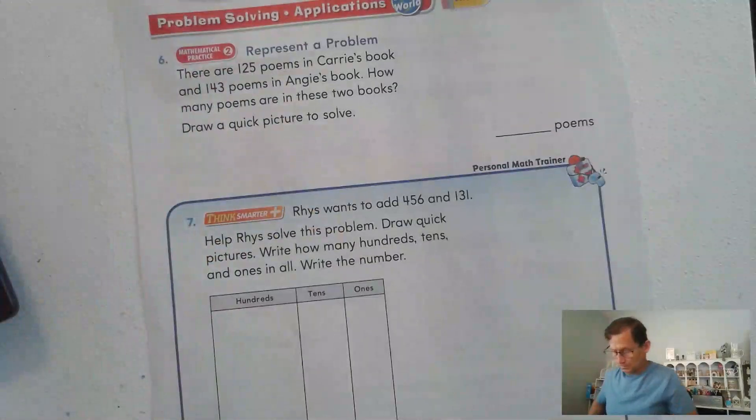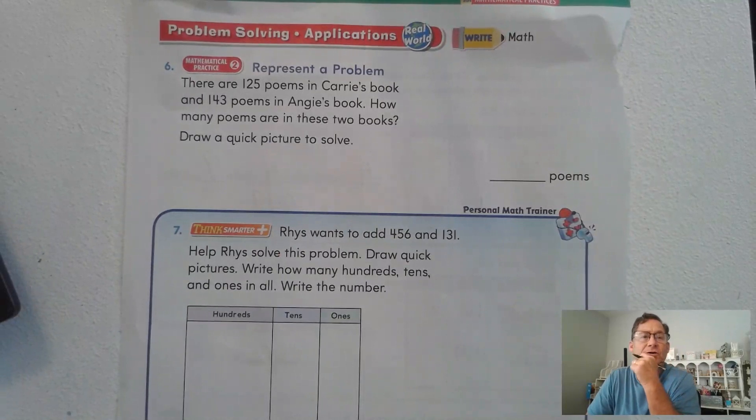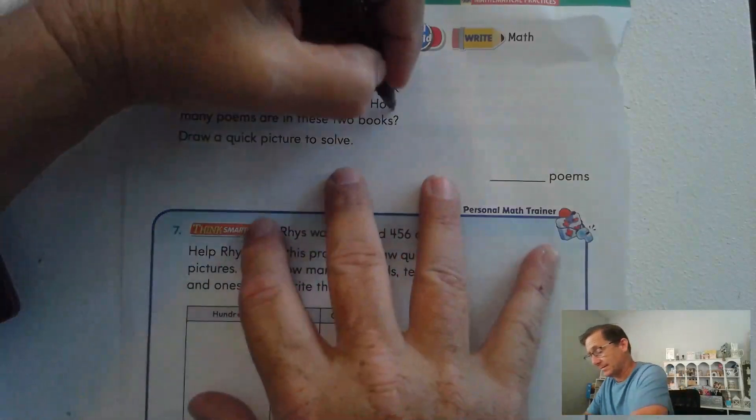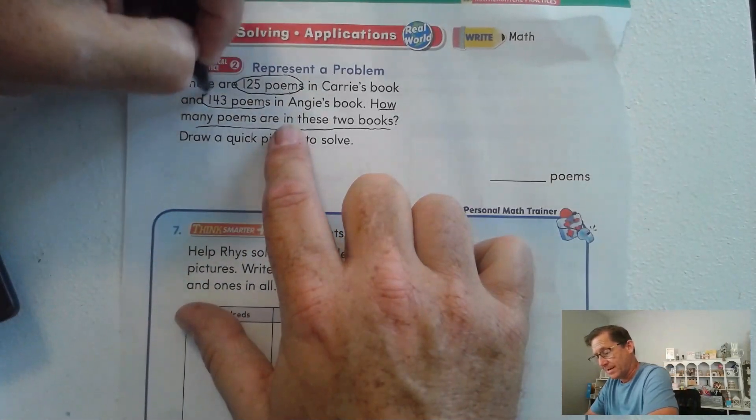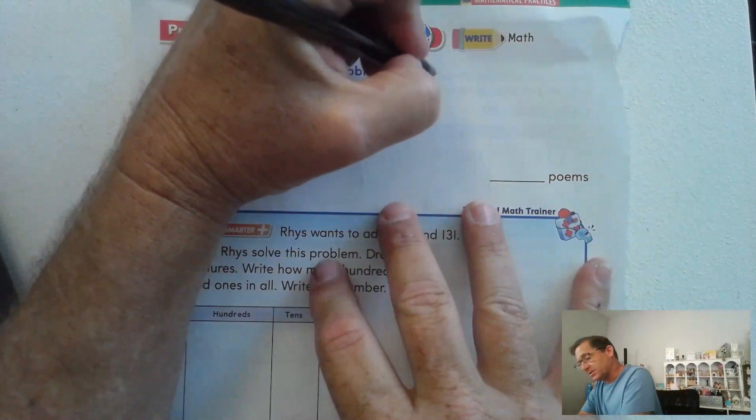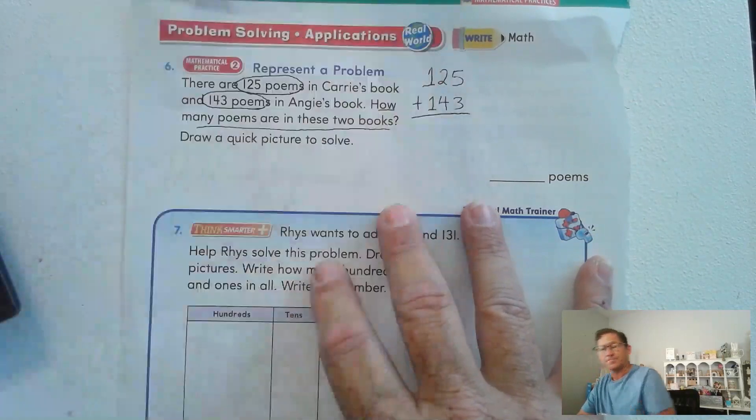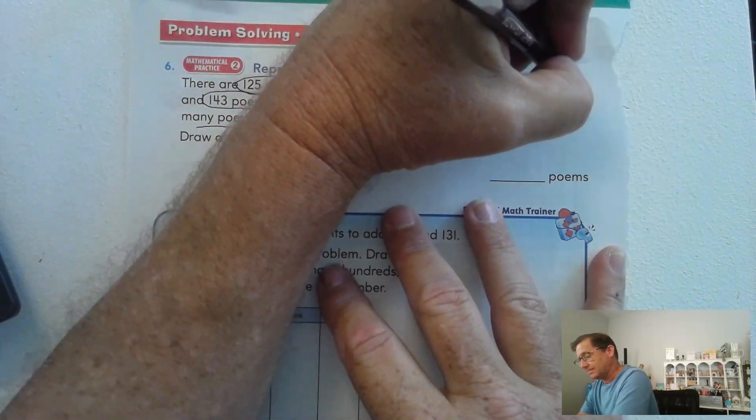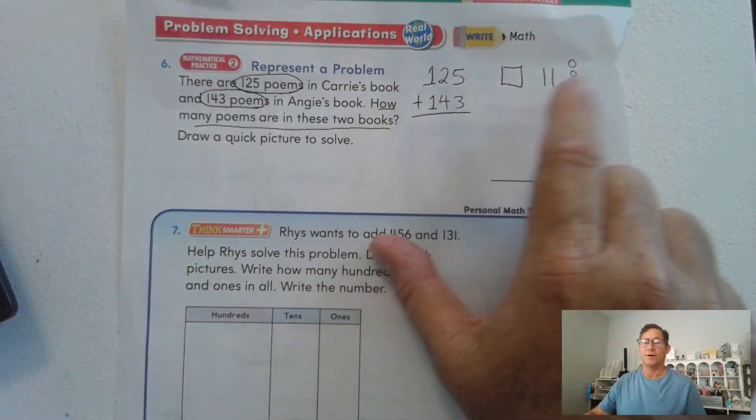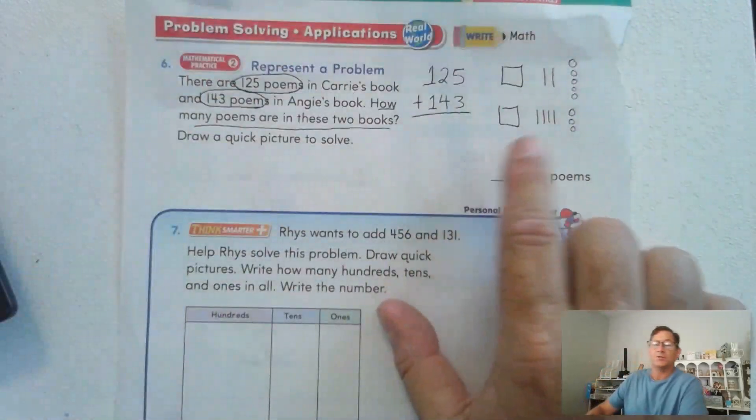Let's go to page 284. Represent a problem: there are 125 poems in Carrie's book and 143 poems in Angie's book. How many poems are in these two books? And it wants us to draw a quick picture to solve. We have 125 in one of them and 143 in another, so our addition problem would be 125 plus 143. So the quick picture would be 100 and five ones, 125, and 100, 143.